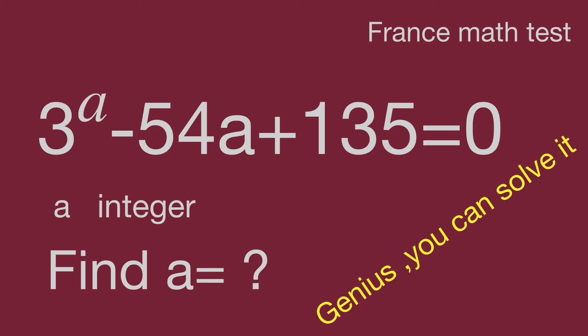3 power a minus 54a plus 135 equal to 0. a is an integer. Find the value of a.